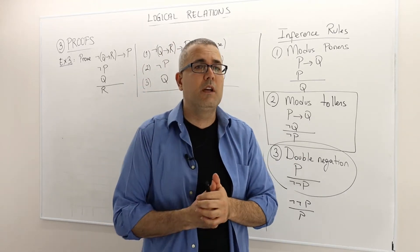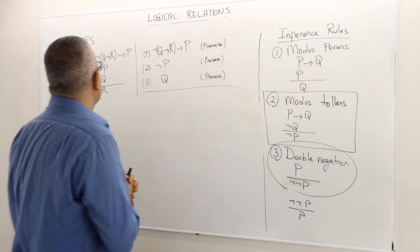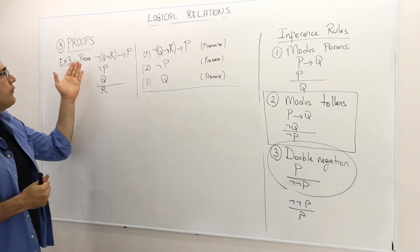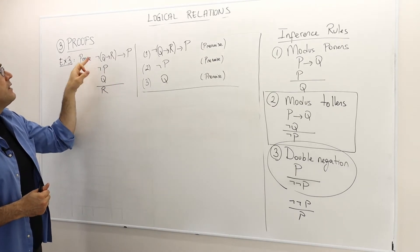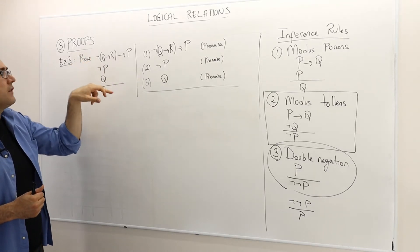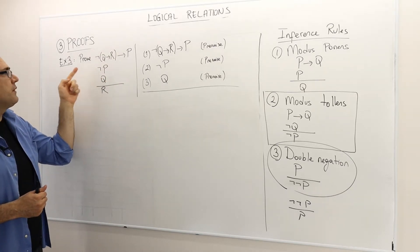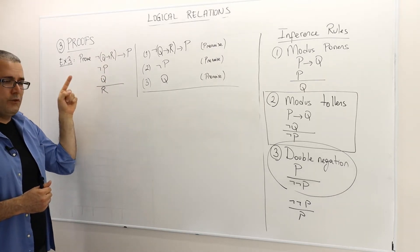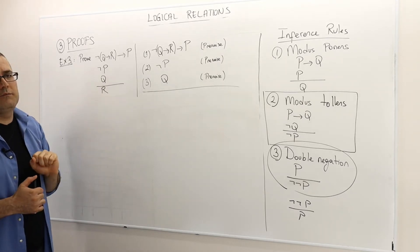Now it's the third example. It's a bit more complicated than the previous two. It says prove the following argument where the first premise is not Q implies R implies P. The second premise is not P. The third premise is Q. And therefore the conclusion is R.